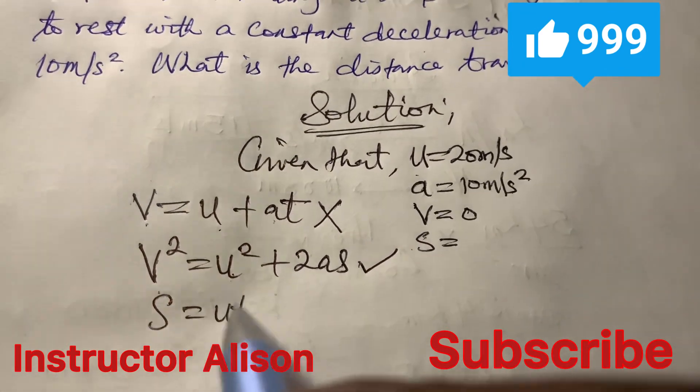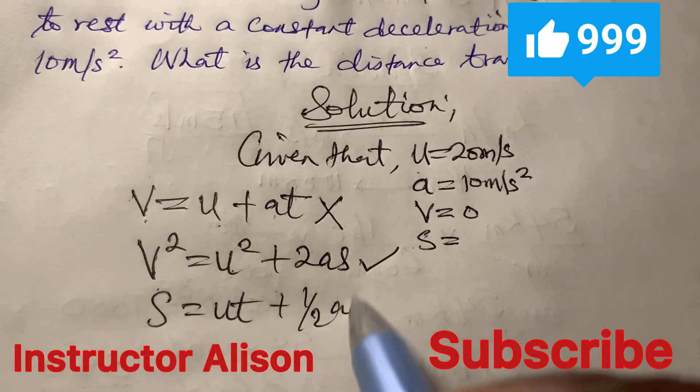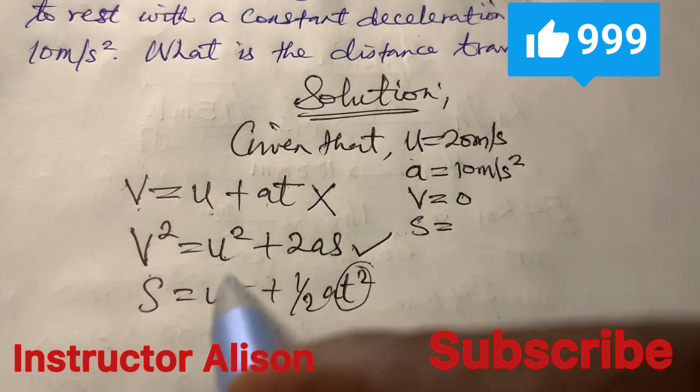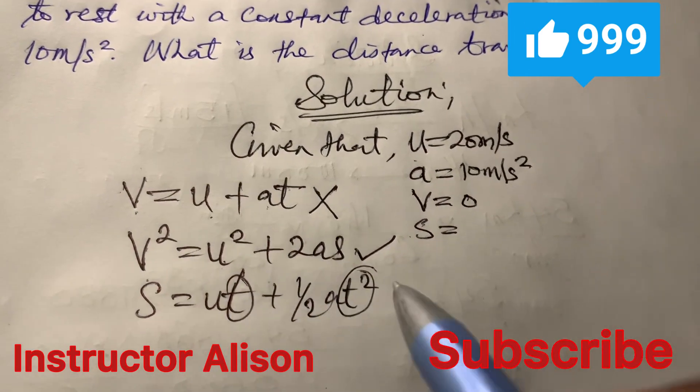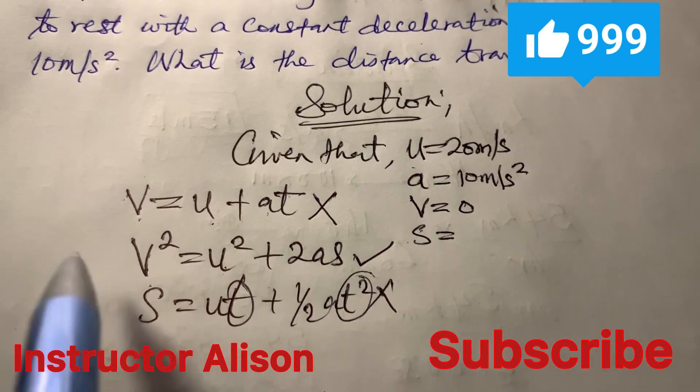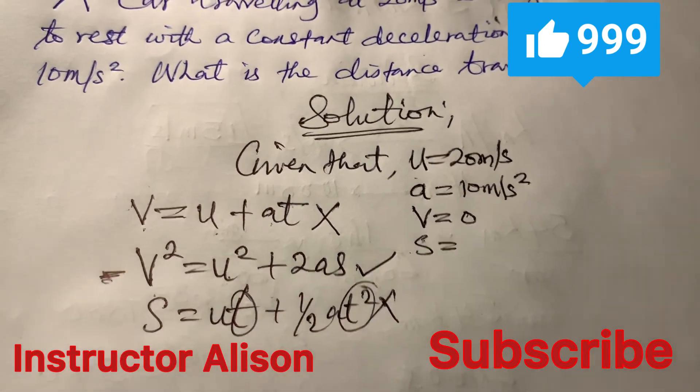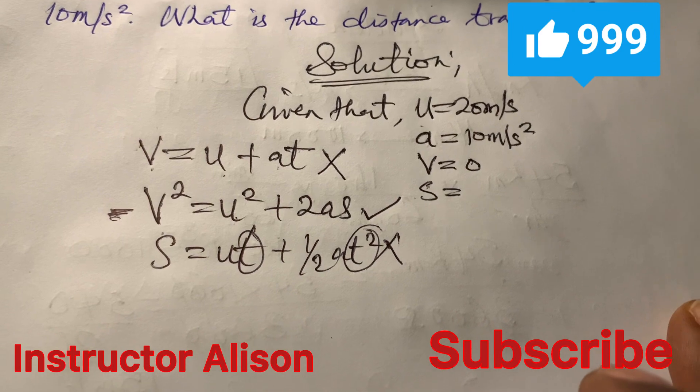We still have S equal to UT plus half AT squared. Also to have time in this particular case, you don't want to consider this particular formula. So this is the best. You could be able to see how I was able to choose the best formula for this problem.